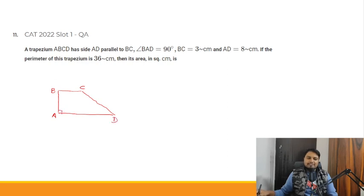this angle is 90°, and BC equals 3, AD equals 8. If the perimeter of the trapezium is 36 cm, we have to find the area in square cm.